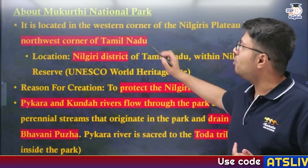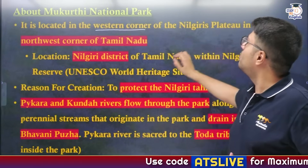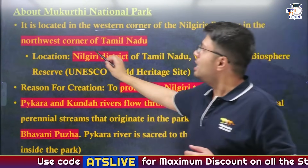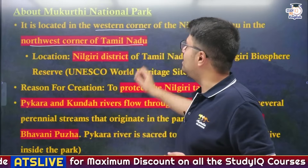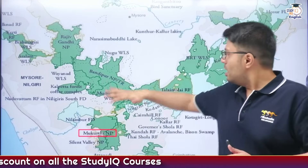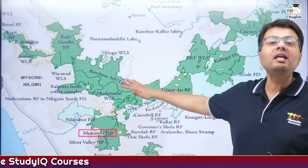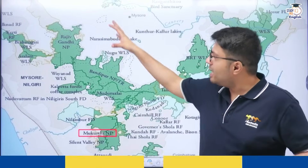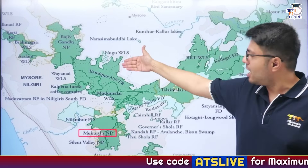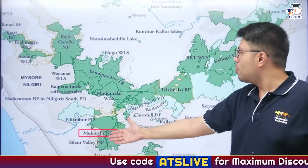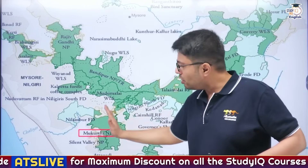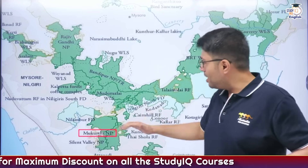In terms of location, Mukurti National Park is located on the western corner of the Nilgiri Plateau, prominently in the northwest corner of the state of Tamil Nadu, as you can understand from this map. The surrounding area is full of protected areas — you can see Rajiv Gandhi National Park, Bandipur National Park, and Mukurti itself, in the northwest corner of Tamil Nadu.